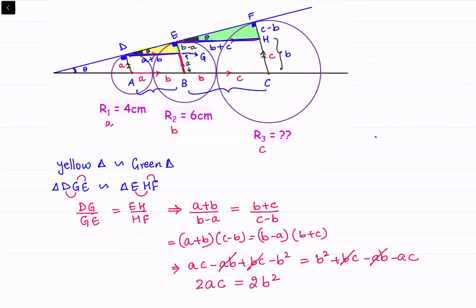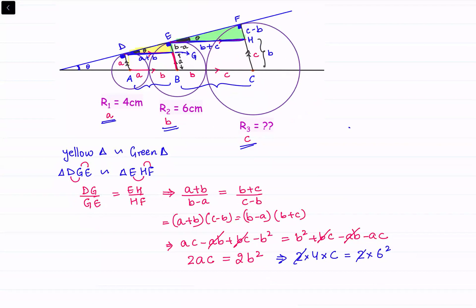So we have ac = b², where a, b, c are the radii. Substituting a = 4 cm and b = 6 cm: 2 × 4 × c = 2 × 6², which simplifies to 4c = 36, giving c = 9 cm. So the radius of the third circle r3 is 9 centimeters.